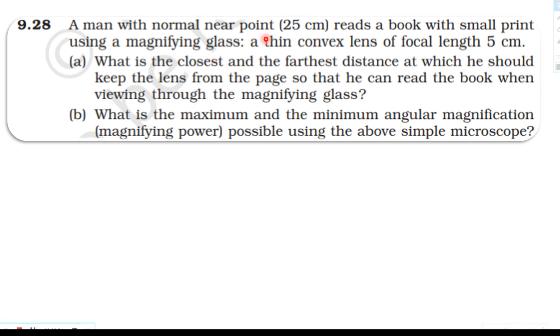So a person with normal near point 25 centimeter is reading a book with small print using a magnifying lens. The focal length is five centimeter. We need to find the closest and farthest distance where the object should be placed. The image distance in the first case will be 25 centimeter, and in the second case the image distance will be at infinity. We need to find the object distance using the lens formula.